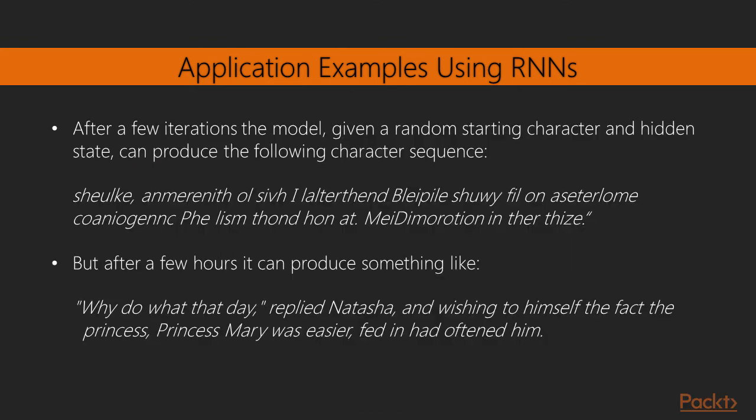It turns out that after a few training iterations the model given a random starting character and a hidden state can produce the following character sequence, that is pretty impossible to decipher. But after a few hours it can produce something like this: 'Why do what that they?' replied Natasha and wishing to himself the fact that Princess, Princess Mary was easier, fed in head, often in. Which does not make sense but it's almost grammatically correct and follows a common structure of sentences in a dialogue. Amazing right?